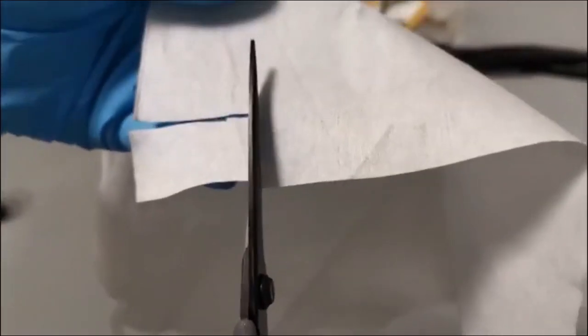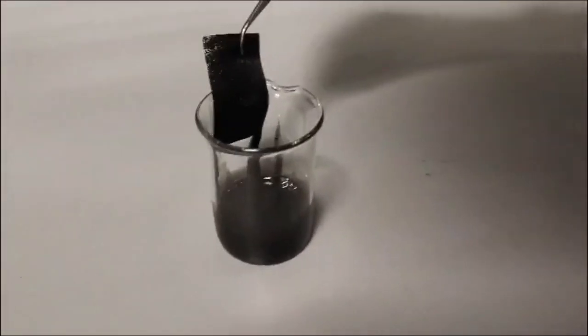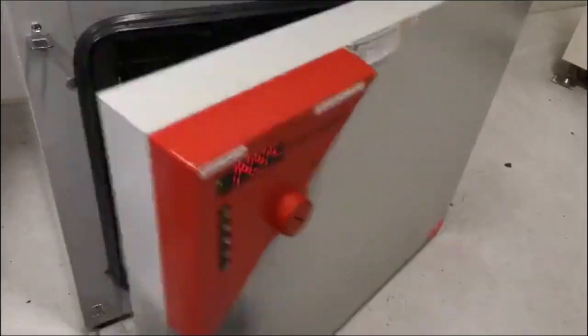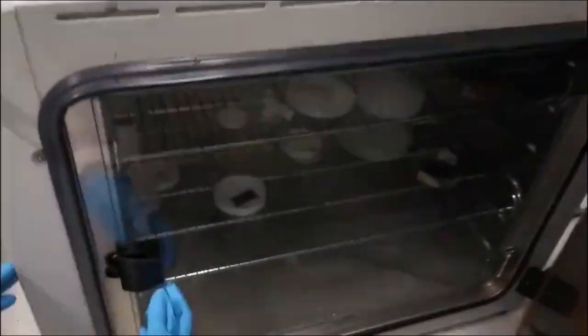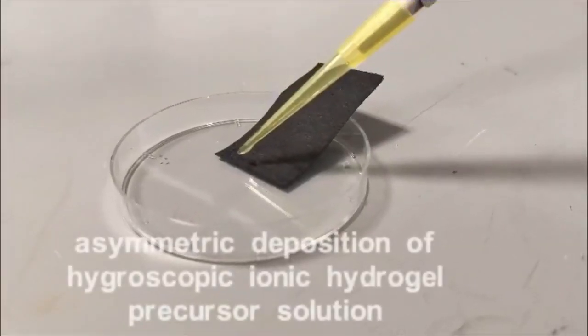One region of the fabric is coated with a hygroscopic ionic hydrogel, and this region is known as the wet region. Made using sea salt, the special water-absorbing gel can absorb more than six times its original weight and is used to harvest moisture from the air.